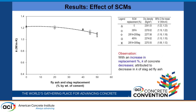The next parameter was the effect of SCMs — supplementary cementitious materials. Five concrete batches were prepared: a reference, 20% fly ash, 45% fly ash, and combinations of fly ash and slag. A decrease in conductivity was observed, but not very significant — from about 1.2 down to 1.1 at 50% SCM replacement — because slag and fly ash have only slightly lower conductivity than cement.